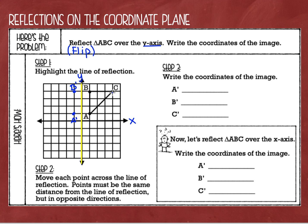For point C, I start at the point and count until I hit the line of reflection, then count the same number of spaces the other way. Here's point C — I start counting: one, two, three, four. It took me four spaces to get to the line, so one, two, three, four the other direction means it ends up over there. It's four places to the right to start, now it's four places to the left.